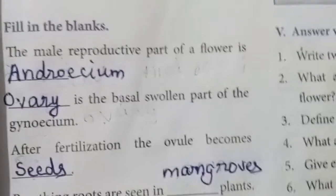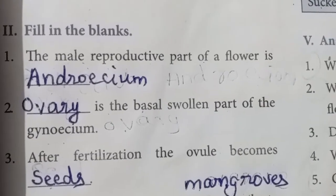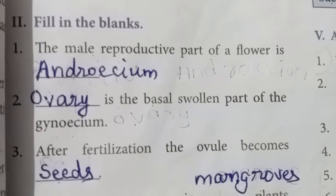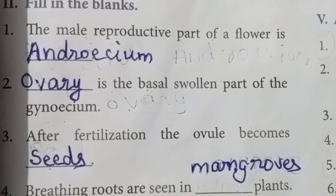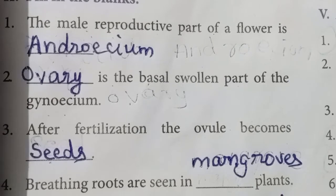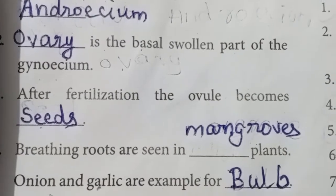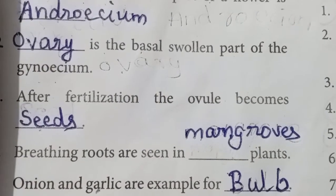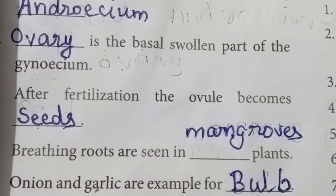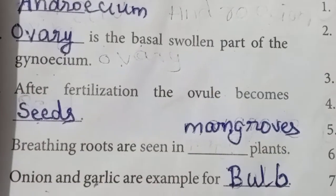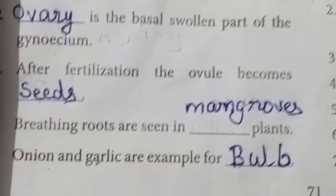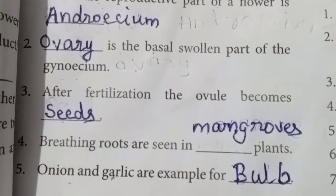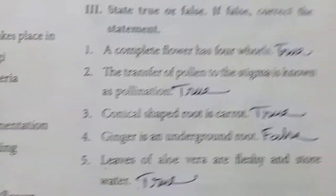Fill in the blank section: The male reproductive part of the flower is the androecium. Ovary is the basal swollen part of the gynoecium. After fertilization, the ovule becomes seeds. Breathing roots are seen in mangroves. Onion and garlic are examples of bulb.